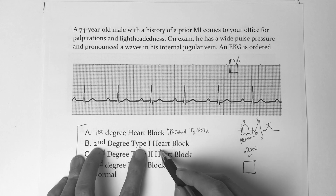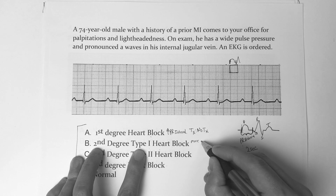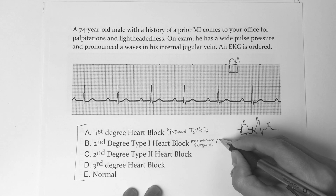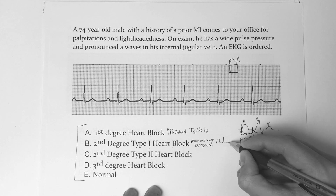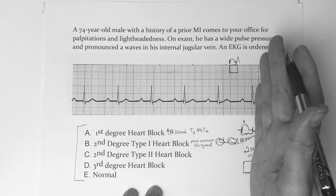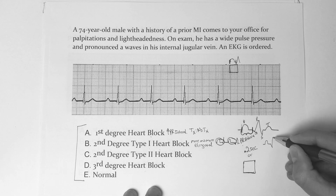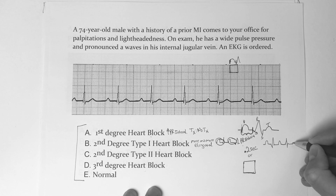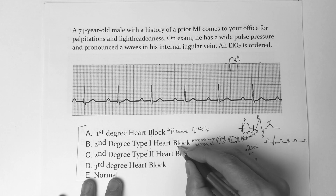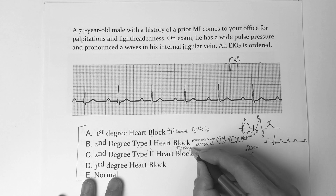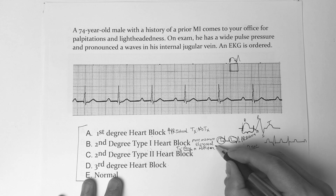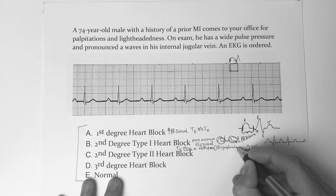A second-degree type 1 heart block is when that PR interval becomes more and more elongated — the distance is going to get longer, then longer before it gets to the next QRS. It's going to be more, more, and then perhaps even a dropped beat. So: QRS, longer PR, QRS, and then a dropped beat. That's a second-degree Mobitz type 1. Treatment could be no treatment for Step 1, or atropine if the patient is symptomatic for Steps 2 and 3.